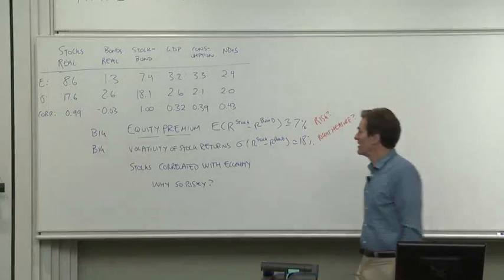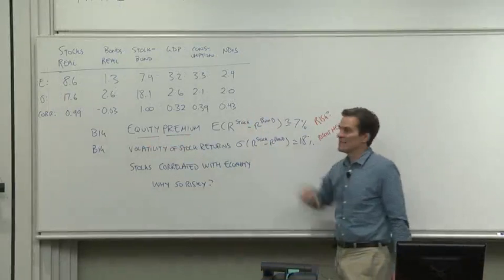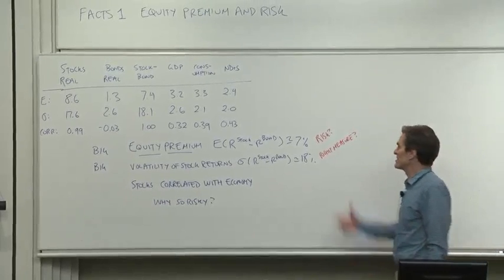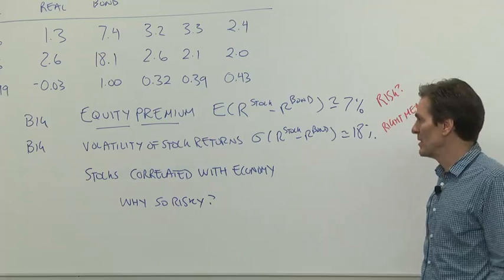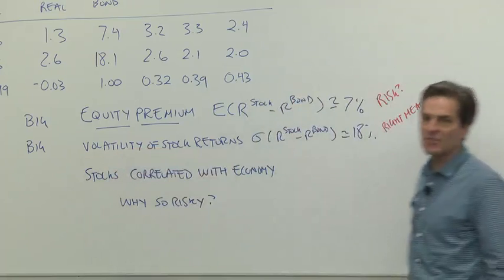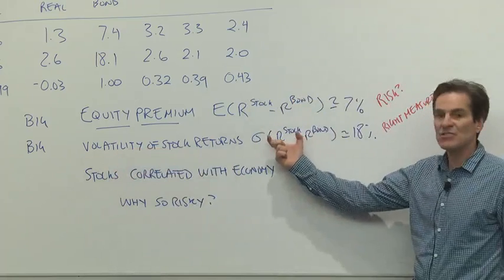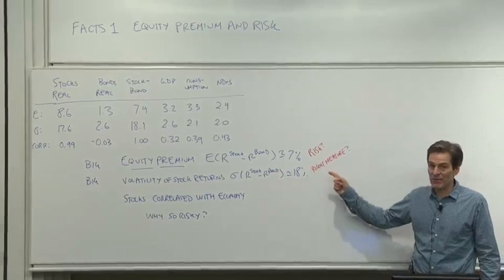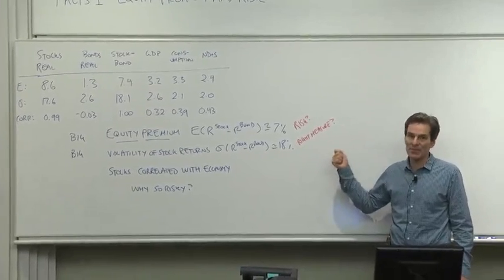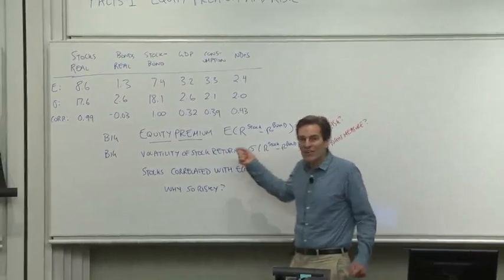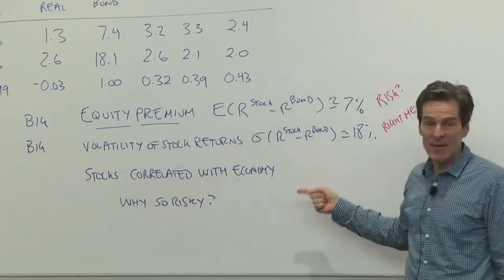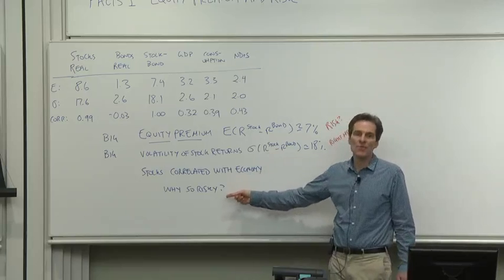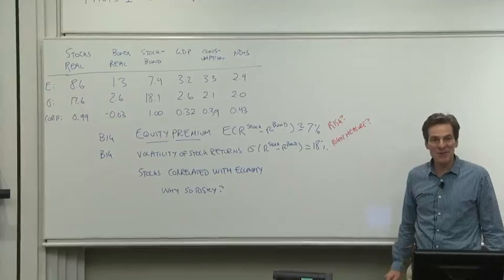Let me summarize the facts. The equity premium is big — the average return of stocks over bonds is about 7%. Why doesn't everybody put their money into stocks? There must be risk; stocks must be riskier than bonds, making people afraid of them. Fact two: stocks are much more volatile than bonds — the standard deviation of the stock-minus-bond return is about 18% annually. Is volatility the right measure of risk? No, but it makes you think about what the right measure is. Why are stocks so risky? They're correlated with the economy, but they move around quite so much more. Those are our basic facts — let's do some theory to find out where they come from.